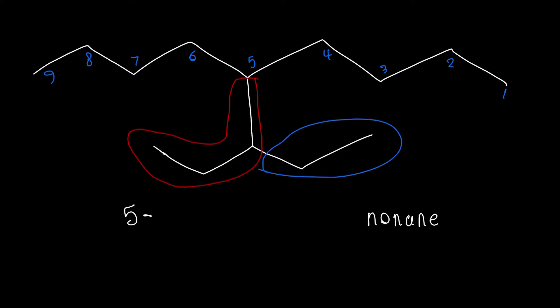So if you go through the longest chain in the branch, you can see that we have 1, 2, 3 carbons. So this is going to be called a propyl.